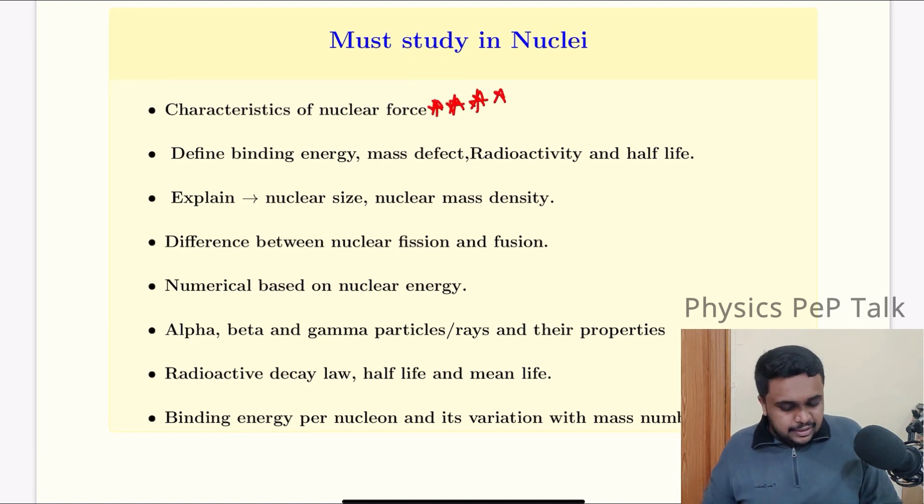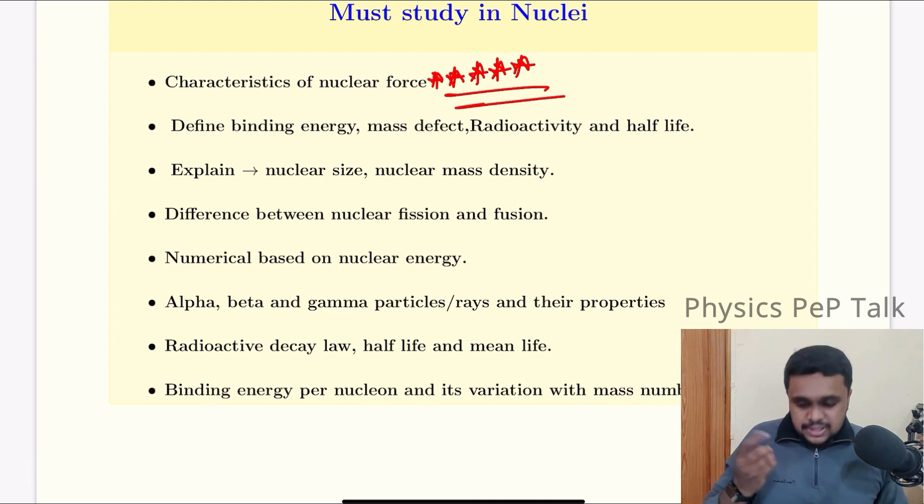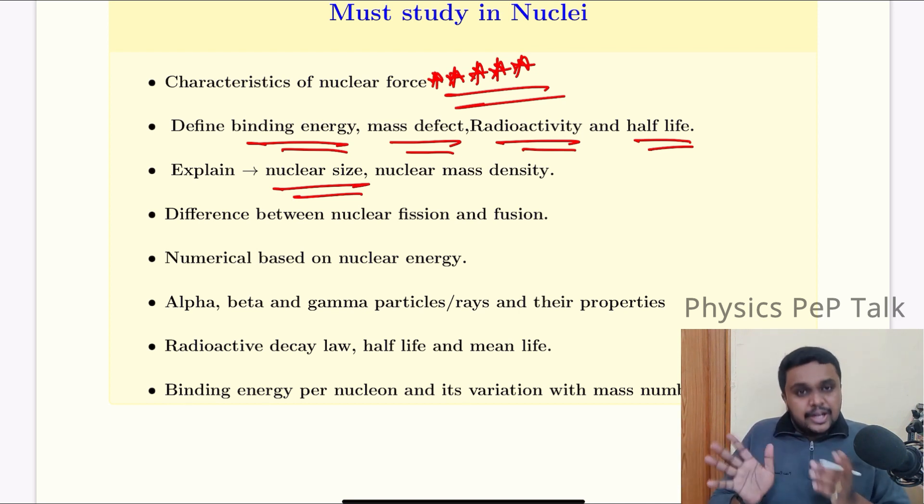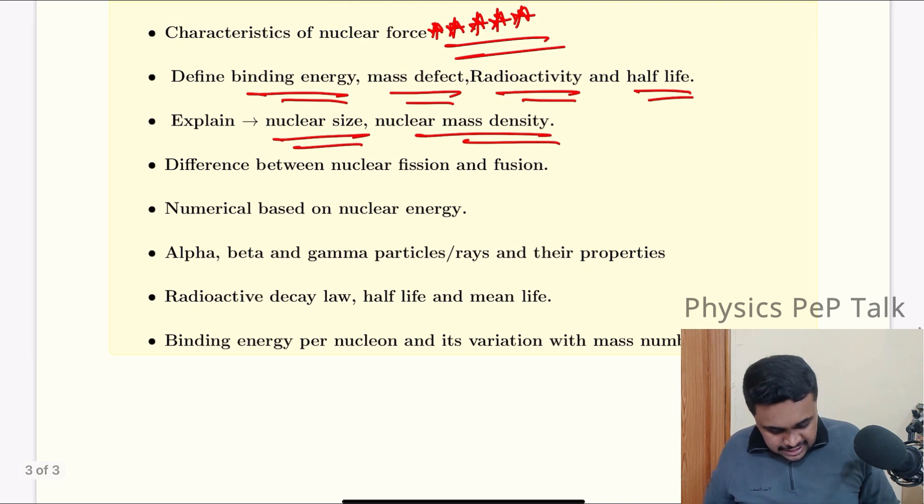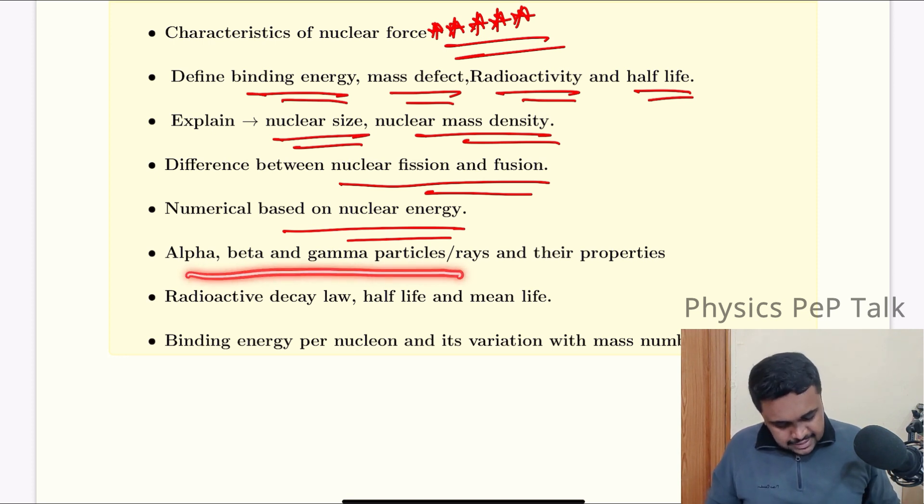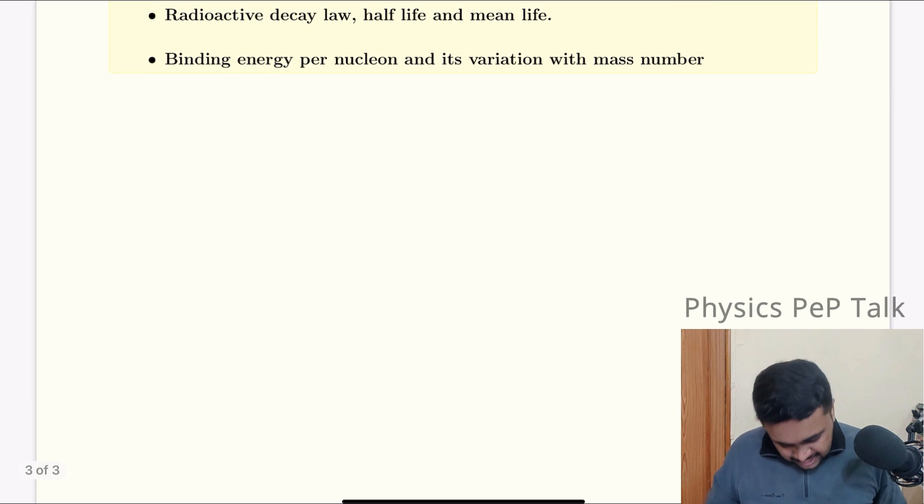Important topics summary: Define binding energy, specific binding energy, mass defect, radioactivity, half-life. Explain nuclear size: r equals r0 A power 1 by 3. Nuclear mass density. Difference between nuclear fission and fusion for three marks. Numericals based on nuclear energy. Alpha, beta and gamma particles, their properties. Radioactive decay, half-life, mean life. Binding energy per nucleon and its variation with mass number. All these are important.